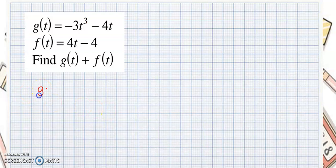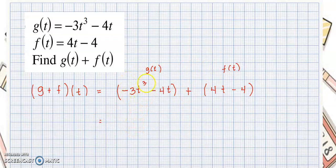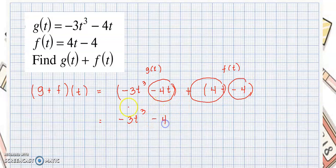Next example. We wanted to know what is g plus f of t. This would be equal to negative 3t cubed minus 4t, plus f of t which is 4t minus 4. We don't have a like term for negative 3t cubed, so we just copy it. Then negative 4t plus 4t equals 0. And we have the remaining negative 4. So the answer for this one would be negative 3t cubed minus 4.